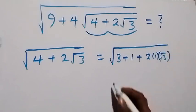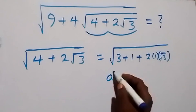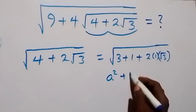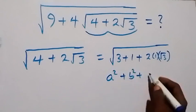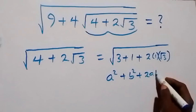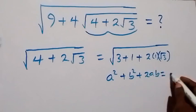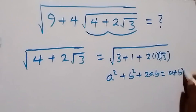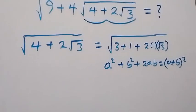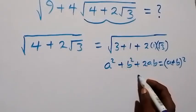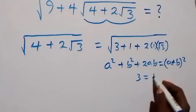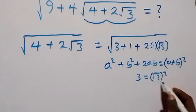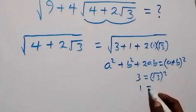We are about to write this in the format a² + b² + 2ab, which can be summarized as (a + b)². Now, 3 can be written as (√3)², and 1 can be written as 1².